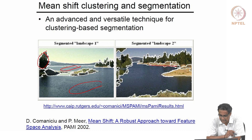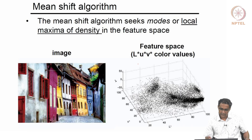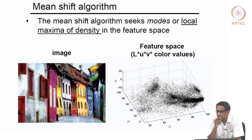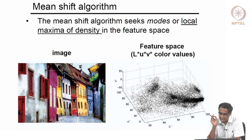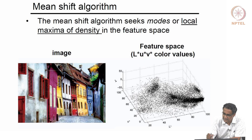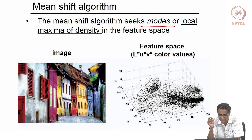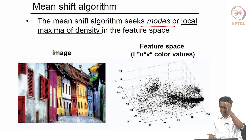Mean shift is a versatile technique for segmentation. It is an iterative process — like a gradient descent algorithm — that seeks modes or local maxima of a PDF in the feature space. The name 'mean shift' refers to how it shifts the mean every time through iterations.